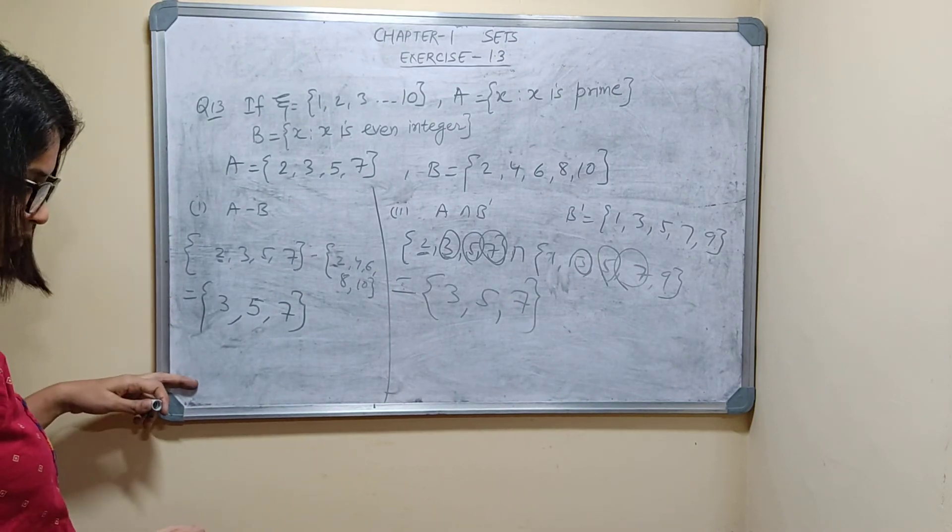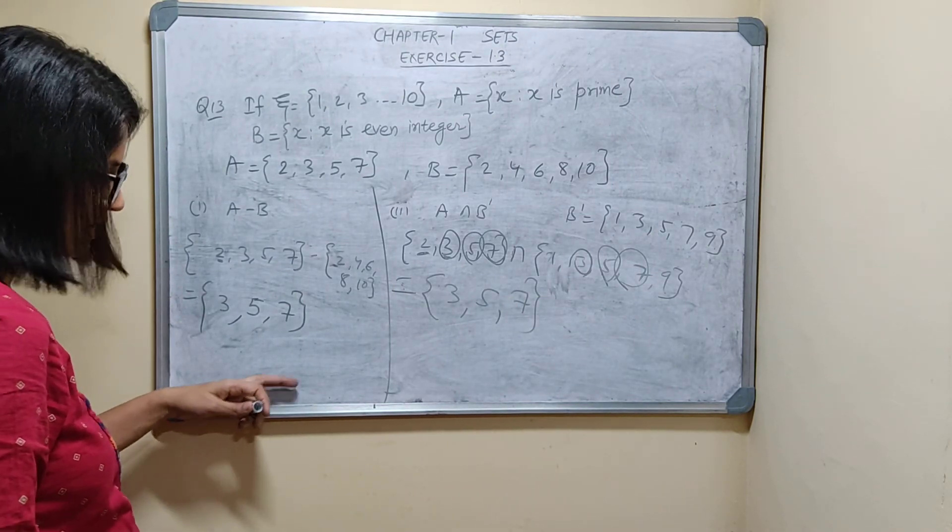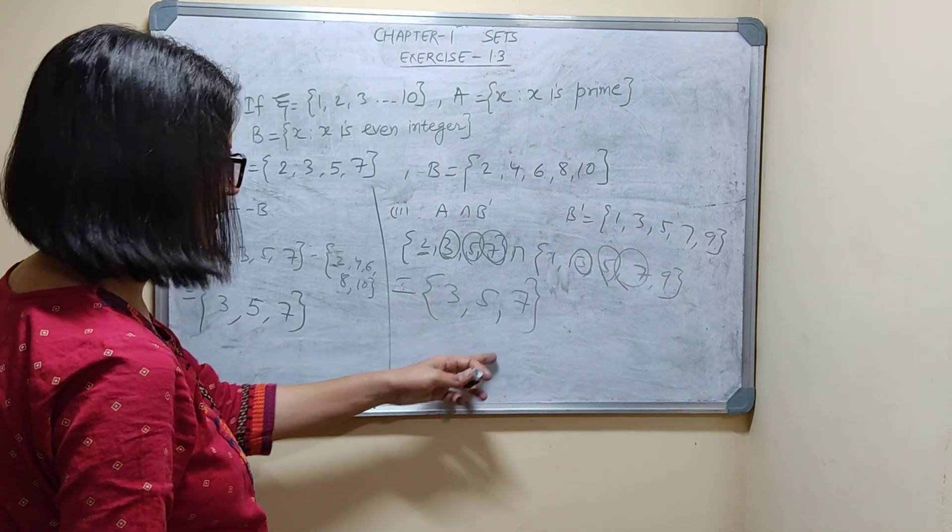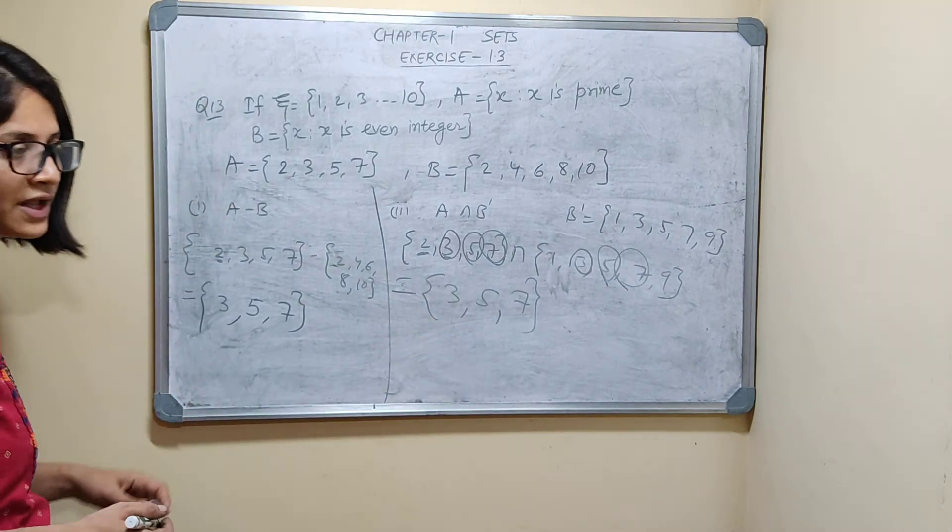So A minus B is equal to 3, 5, 7. And A intersection B dash is also 3, 5, 7. Thank you.